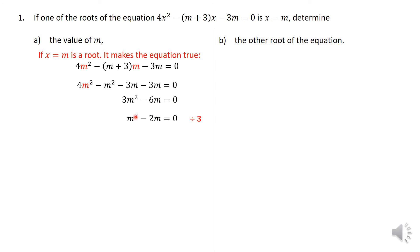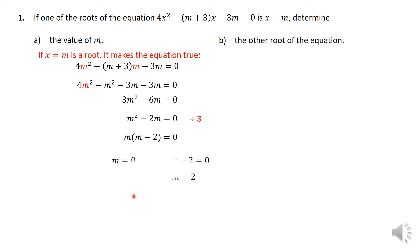There's a common factor of 3, so I'm going to divide throughout by 3. That means 3m² divided by 3, minus 6m divided by 3, and 0 divided by 3. Now I can solve this equation easily and find my two values of m, where m = 0 or m = 2. So I have determined the value of m — in this particular case there are two: m = 0 or m = 2.